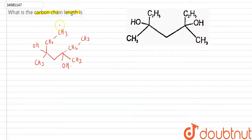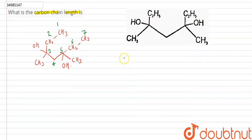So the numbering is as follows: 1, 2, 3, 4, 5, 6, and 7. So the number of carbons equals 7.